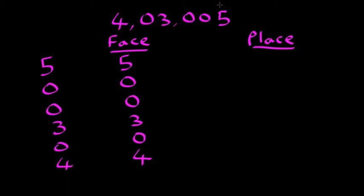The places now are again units, 10s, 100s, 1000s, 10,000s and lakhs. This 6 digit is what we call in Indian place value system lakhs. International system is a little different. That's a topic for another video. But in Indian system, this will be lakhs.